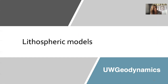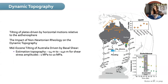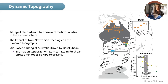The second component of this global research stream is all the research we have done on lithospheric deformation with UW Geodynamics. We have an example of the work that Omer Bauder did, showing how you can study dynamic topography using thermomechanical models. He showed that the tilting of plates can be driven by horizontal motion relative to the asthenosphere. He also worked on the impact of non-Newtonian rheology on dynamic topography, and is now investigating the westward tilting of Australia driven by basal shear with Patrice Ray and Gregory Hausmann.